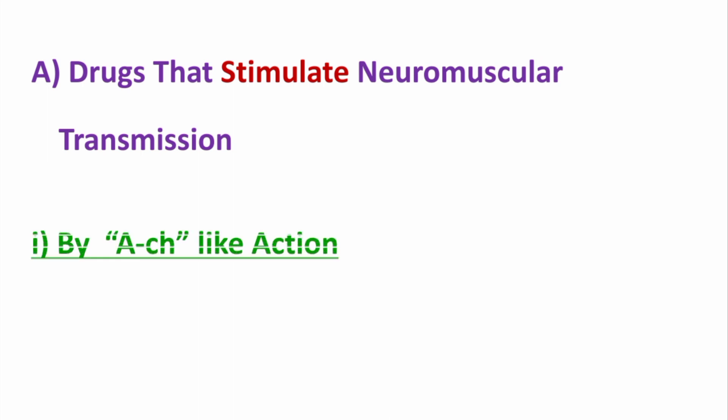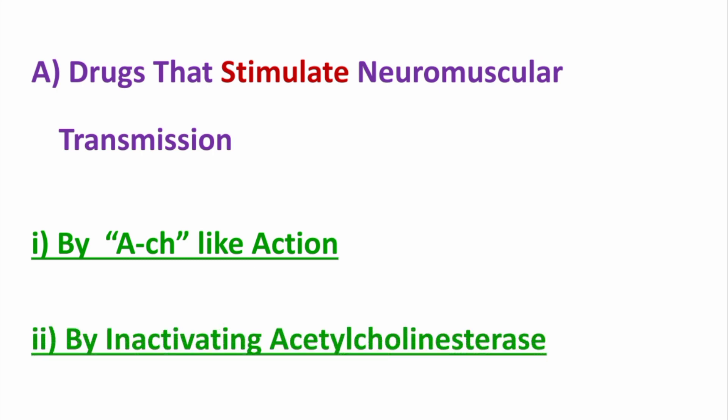First, let us discuss the drugs which increase the neuromuscular transmission. They can be divided into two subcategories: the drugs which have acetylcholine-like action, and the drugs which act by inactivating the enzyme acetylcholinesterase.